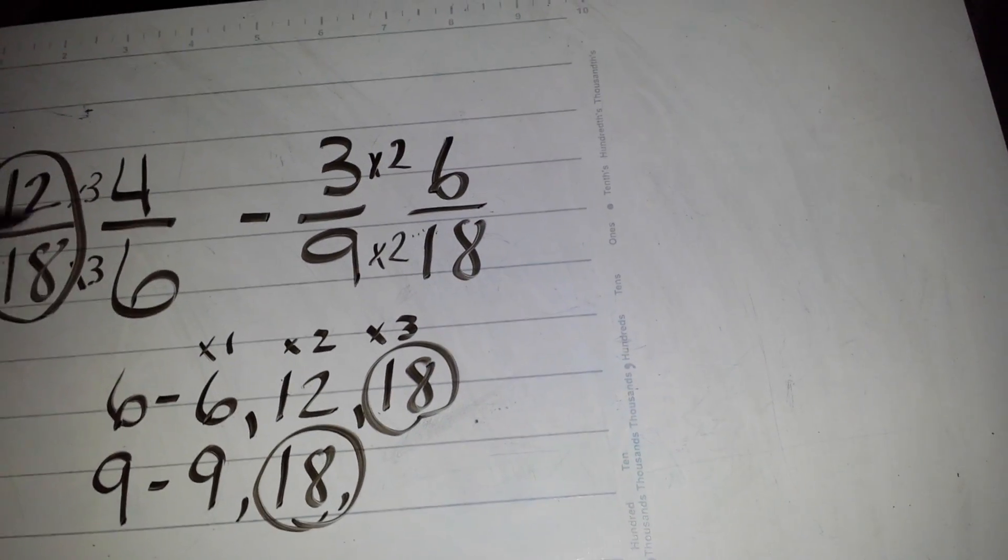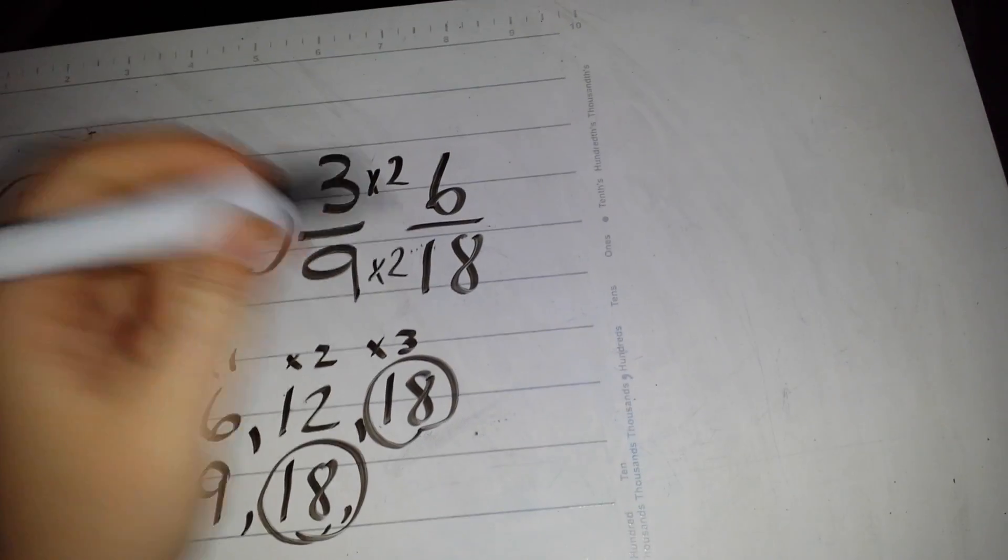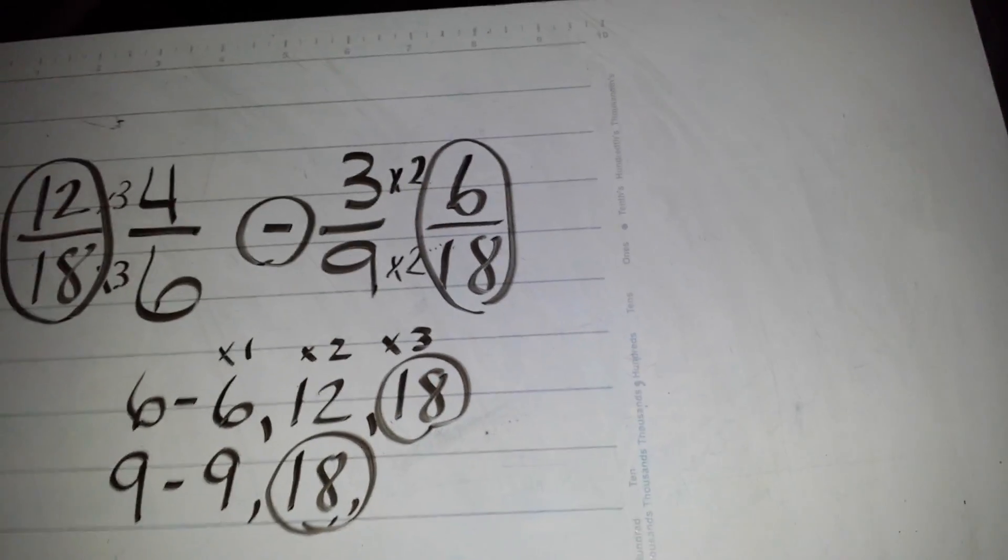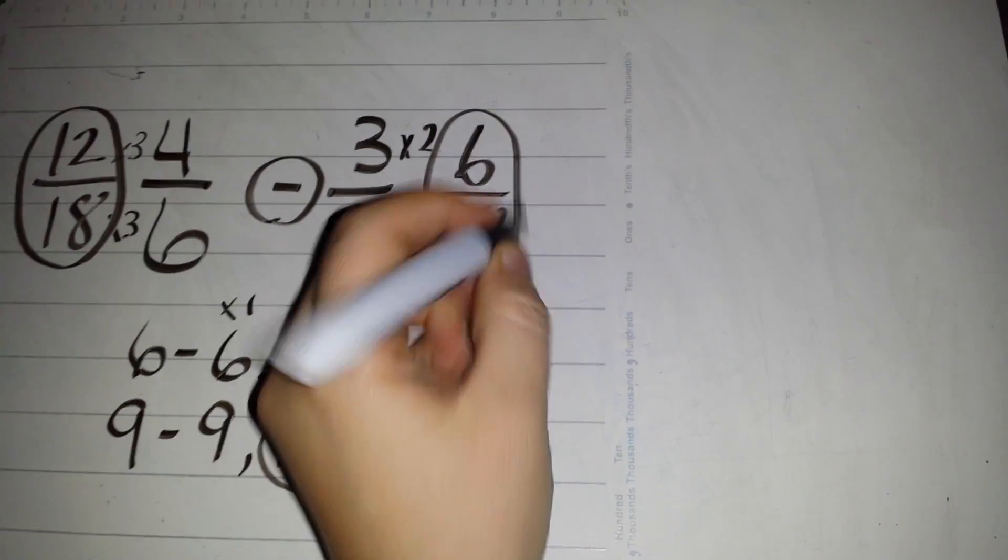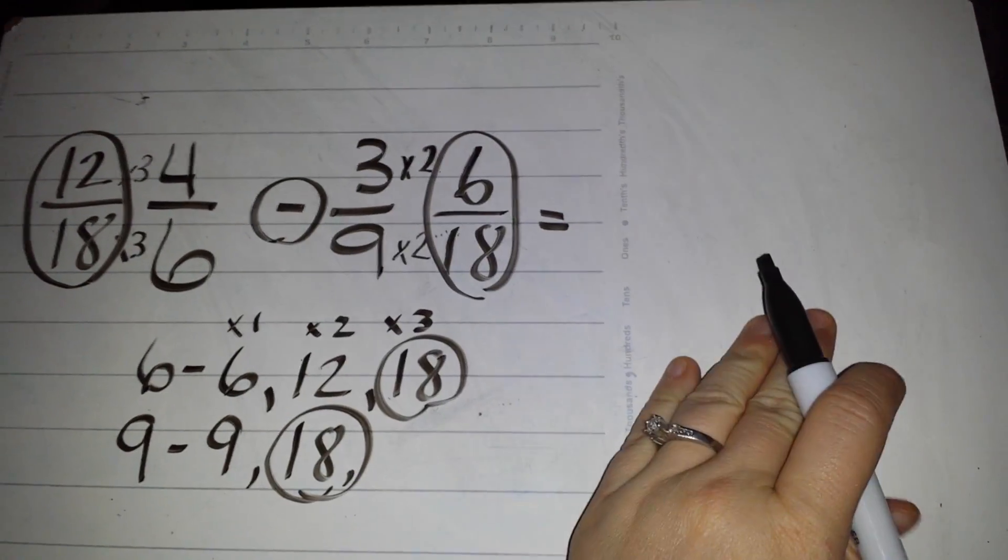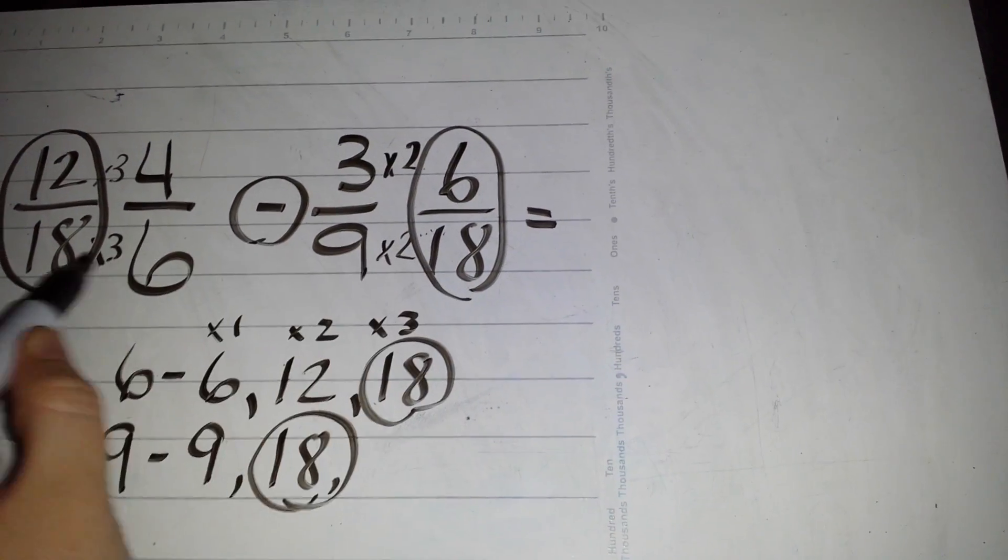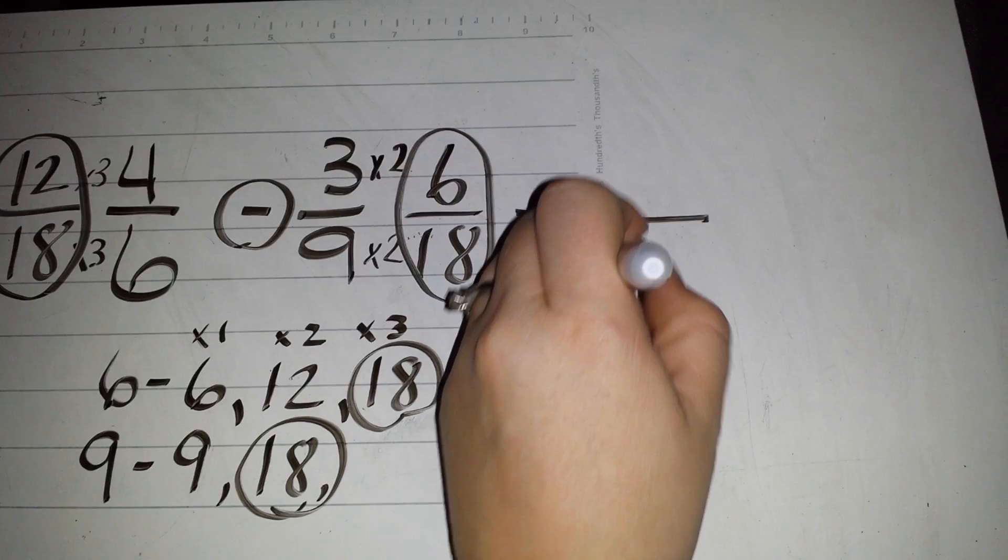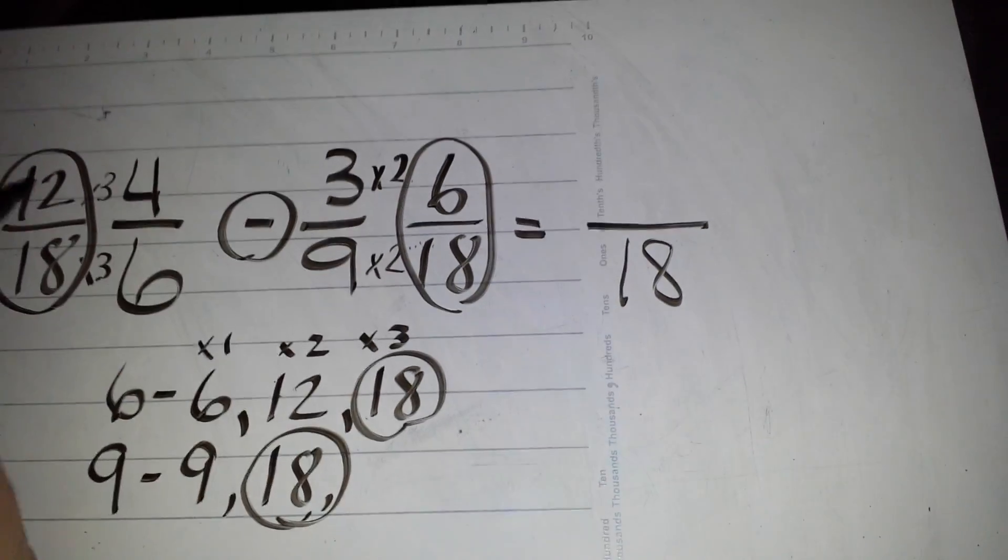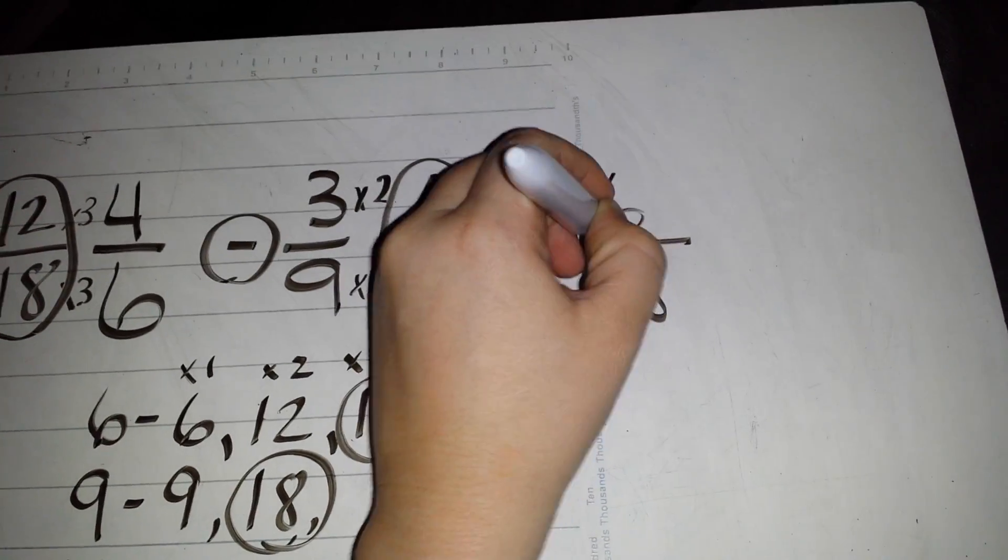So now I'm looking at this fraction and this new fraction here. Again, those of you that are science minded, they have to be the same animal to work with, and they're going to stay that same animal. Twelve minus six gives me six.